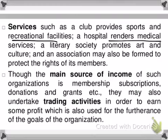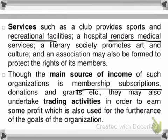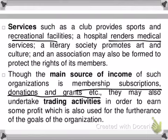You can also see that examples of services are listed — a club provides sports and recreational facilities, a hospital renders medical services, and there are other types of non-profit organizations providing different types of services. The main source of income of these organizations is also given. For a club, membership subscriptions are obviously a main source of income. There are also donations and grants, which could be from a private individual or from the government.